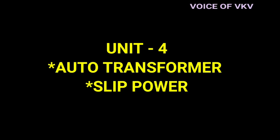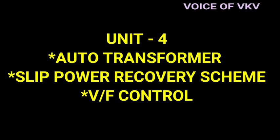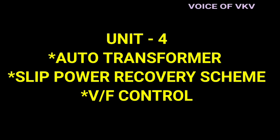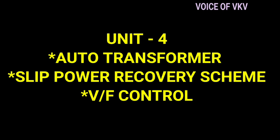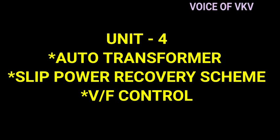Next is Unit 4, which has three important topics. The first one is Auto Transformer or Star Delta Starter. If you want to concentrate on Part B, you will get 20 marks. If you have 20 marks in Part A, you will have 80. If you follow the last previous 6-year question paper, you will have 62 marks, and you can get 4 to 5 marks by following the last few minutes.